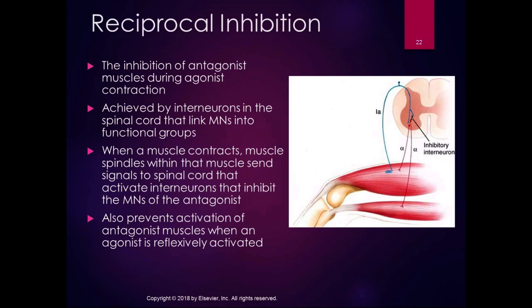This process is used a lot during voluntary motion to prevent antagonist opposition to the movement. For example, when you're trying to contract your quadriceps, you have to inhibit the hamstrings in order to not prevent that movement. Obviously in co-contraction, this isn't happening. Without a mechanism to inhibit those opposing muscles, you are going to get co-contraction.